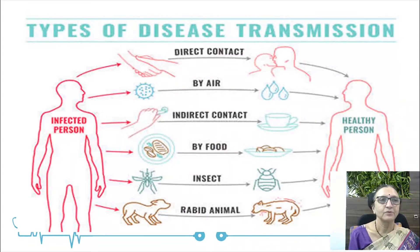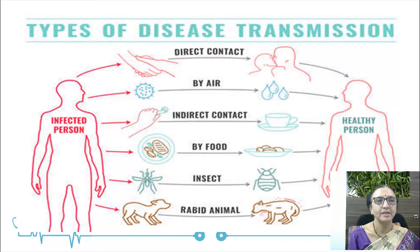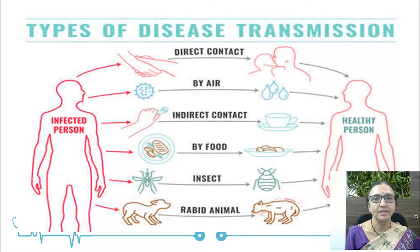Types of disease transmission include: direct contact such as shaking hands and sex; transmission by air through droplets; indirect contact where an infected person's belongings such as mobiles become contaminated and infection spreads when another person touches them and then touches their mouth or nose; transmission by food; and transmission by insects or rabid animals.